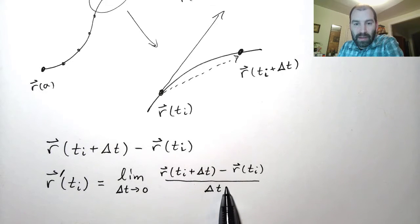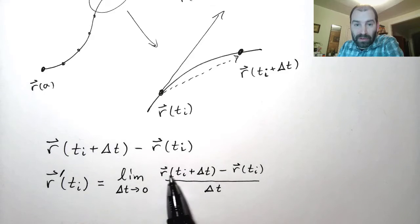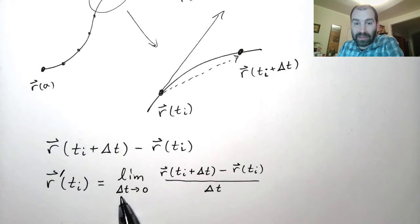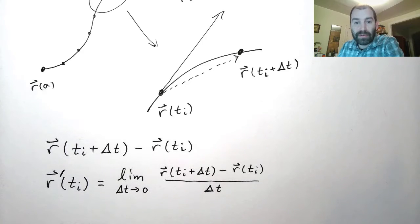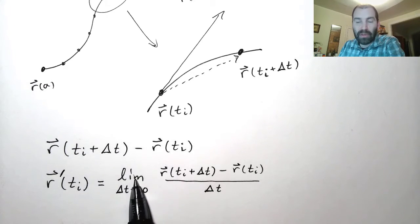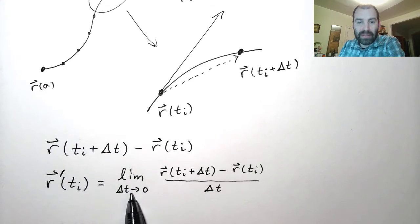This is called a difference quotient. And the limit as the difference in the argument of these functions goes to zero, in this case delta t, as that goes to zero, that gives us the derivative. Well, if this is equal to the limit, that means that when delta t is very, very small, when it's near zero, these two quantities are approximately the same.